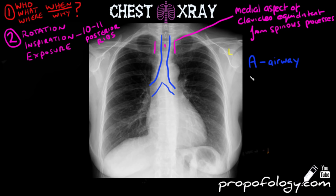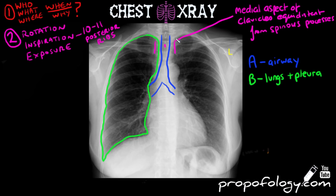Moving on to B, you're going to trace the lung fields and look at the pleural spaces as well. Check that the lung markings go all the way to the lateral aspect of the rib cage, and make sure there are no collections in the distal portions. Make sure there's no collapse of any segments of the lungs, and check that nothing obvious in any of the lung fields looks different from the other side. Of course the patient can have bilateral pathology, but it's good to compare and contrast each side.